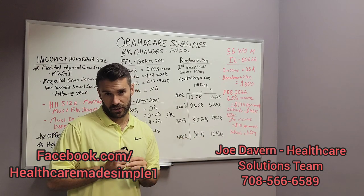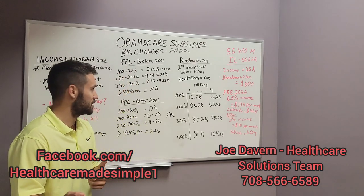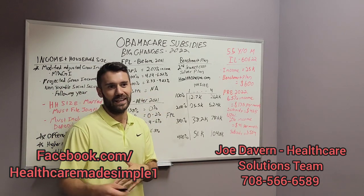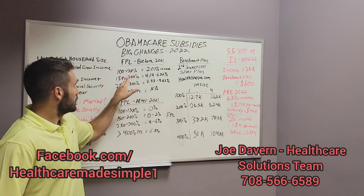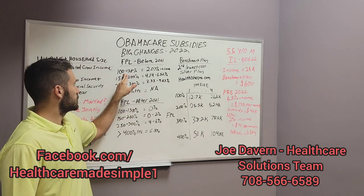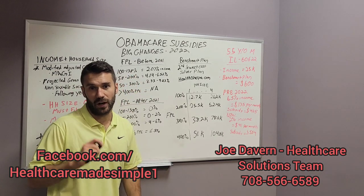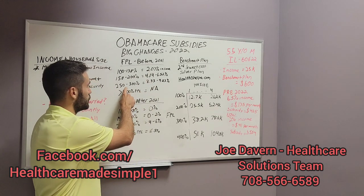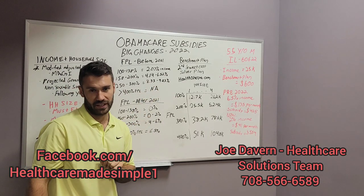This is very important to understand, especially when talking about the huge changes that could benefit you for 2022. Before 2021, depending on where you fell on this chart — for instance, if you were between 100% and 138% of federal poverty level, the most they could charge you for health insurance was about 2% of your income. If you fell between 250% and 300%, they could charge you anywhere from 8.33% to 9.83% of your income.